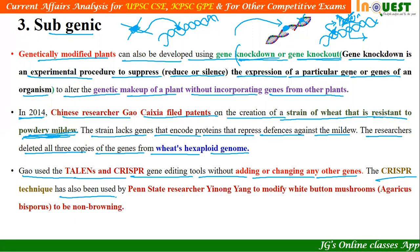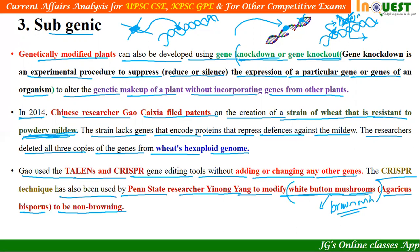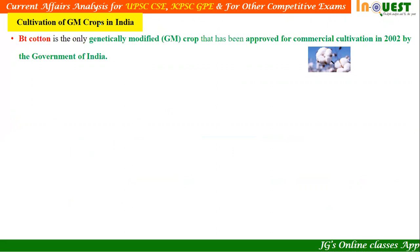The CRISPR technique has also been used by Penn State researcher Yinong Yang to modify white button mushrooms (Agaricus bisporus) to be non-browning. Similar gene modification was done by another team of researchers to retain the white color of button mushrooms and avoid them turning brownish. These techniques silence the gene already within the same DNA without adding any additional gene — those crops are called subgenic crops.